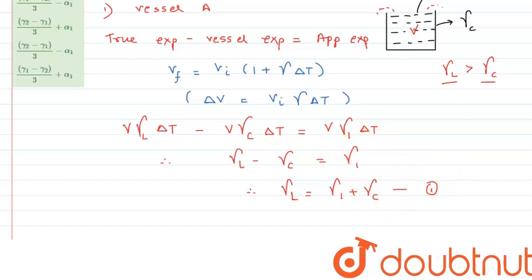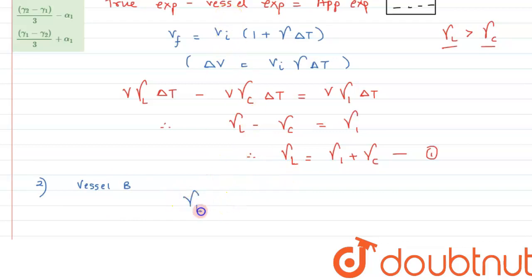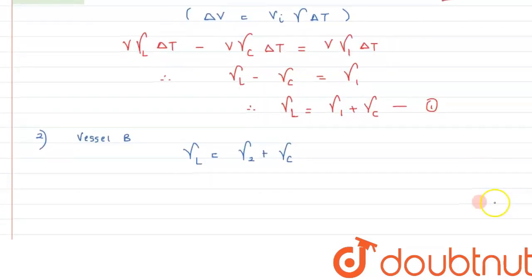In a similar way, for vessel B, we can write: γ_liquid = γ2 + γ_c. Let this be equation number two.